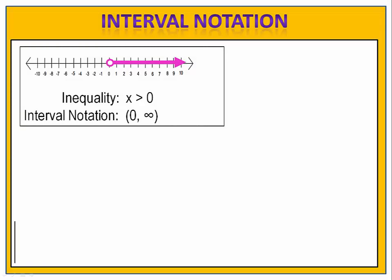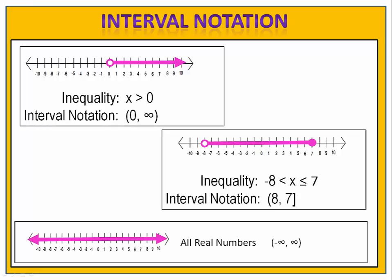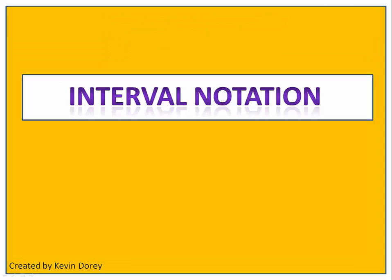We've seen that we can use interval notation synonymously with inequalities. If a set continues endlessly in one direction, we use positive or negative infinity. If a set is bounded by two endpoints, we use those two endpoints with parentheses or brackets. If a set is all real numbers — every number on the number line — we write from negative infinity to positive infinity. All you have to do is write the endpoints in order from left to right and use parentheses or brackets to show whether those endpoints are included or not. This is everything you need to know to get started with interval notation.